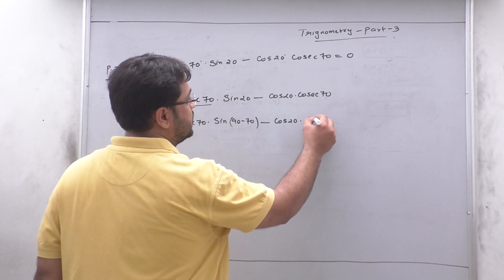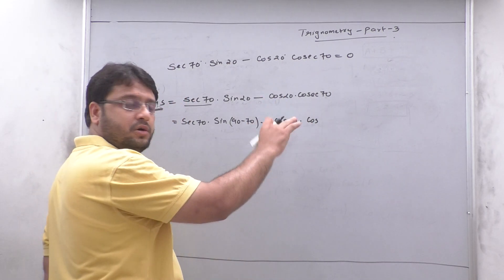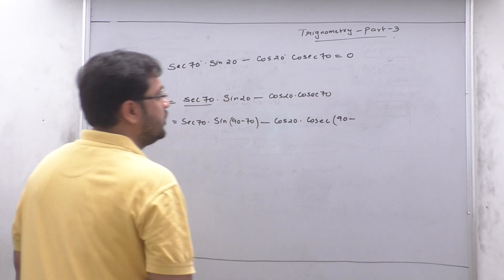If you change this, you will change this. If you change this, you will change this. If you change this one, actually there will be 70. Here is 90 minus 20.